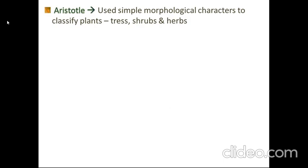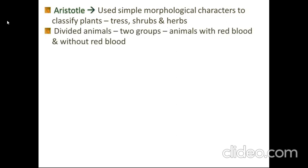Aristotle used simple morphological characters to classify plants into trees, shrubs, and herbs. He also divided animals into two groups: animals with red blood and without red blood.